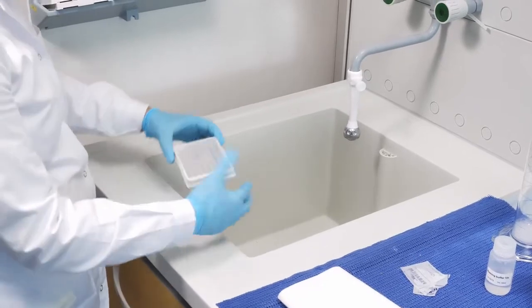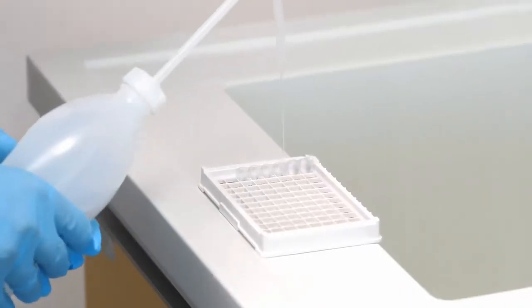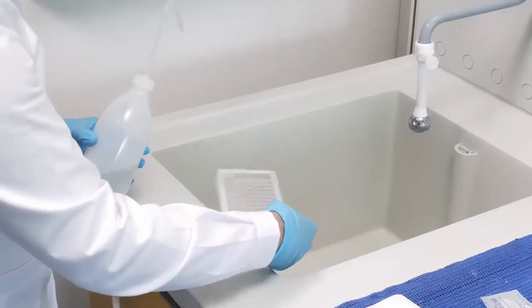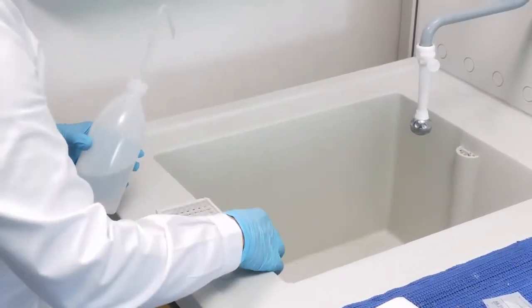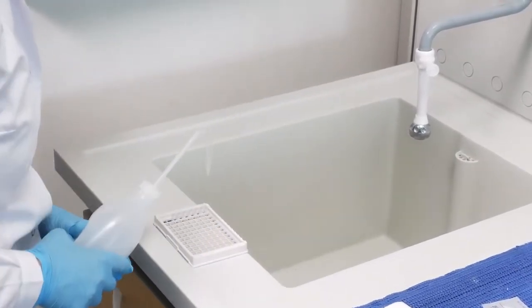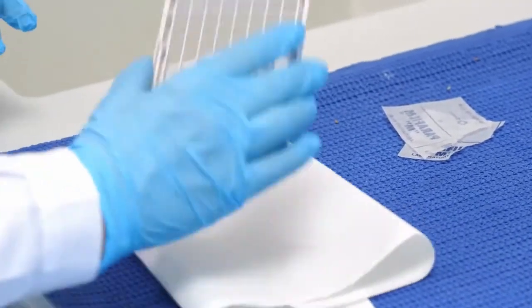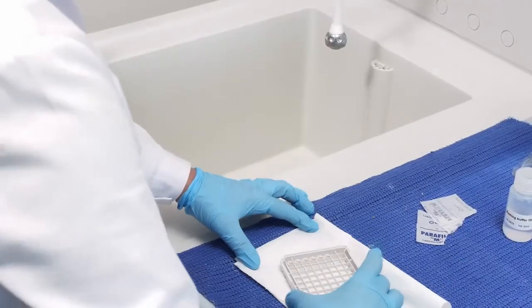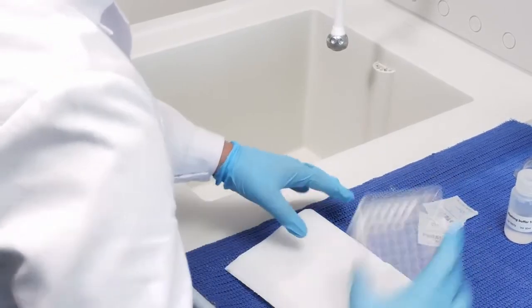Pour the liquid out from wells and fill with washing buffer using a squeeze bottle. Pour the liquid out and repeat the sequence 3 times. Remove the remaining droplets by tapping the microplate upside down vigorously against absorbent paper.